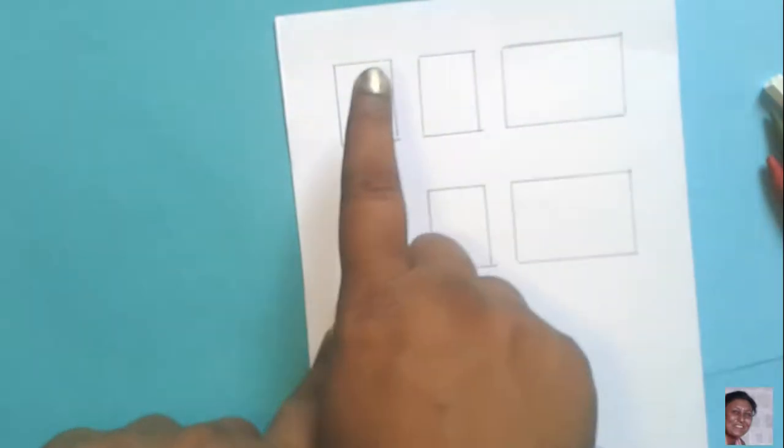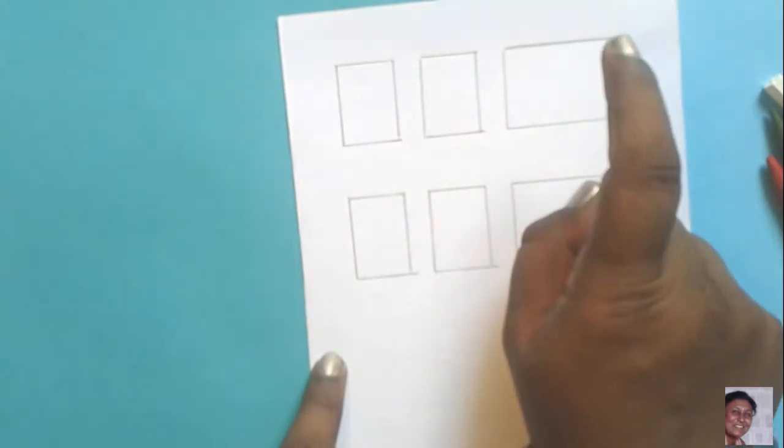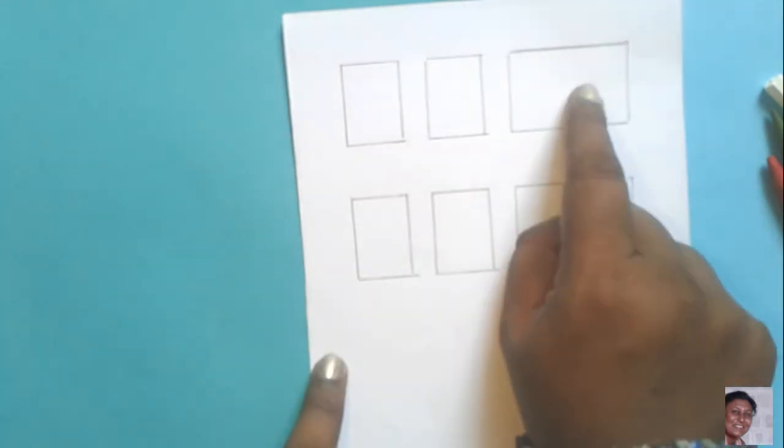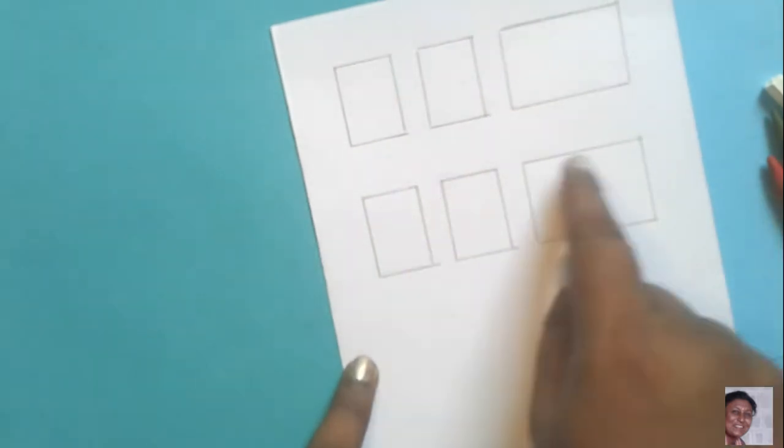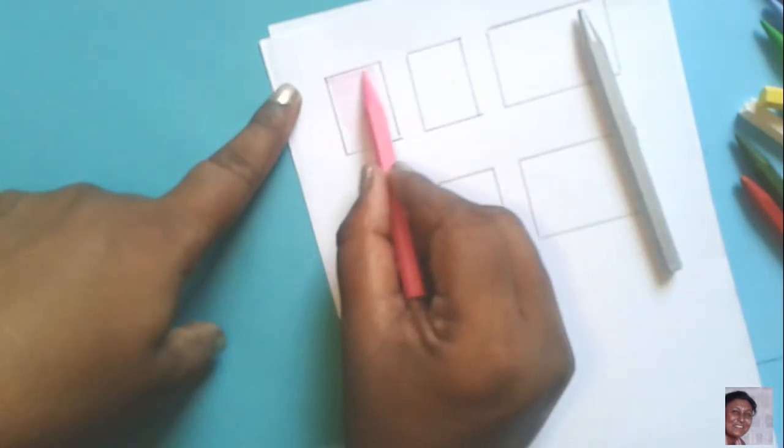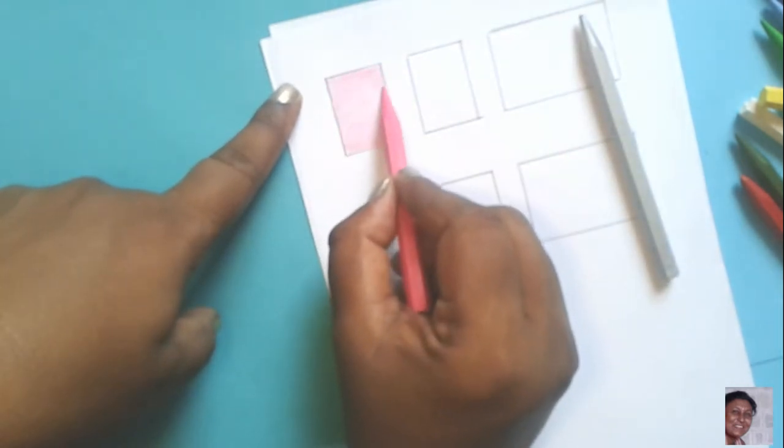Draw two small boxes and one slightly bigger box. Now, pick up any two colors you might have - crayons, or if not crayons, even watercolors are okay.